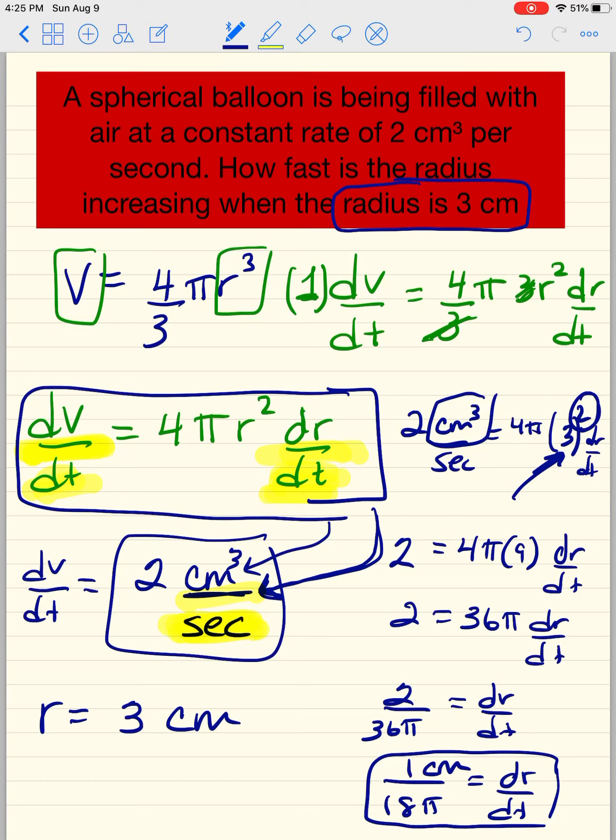Centimeters per second. So your answer is 1 centimeter per 18π seconds or 1/18π centimeters per 1 second. And that's pretty much how you do it.